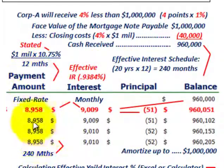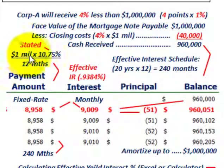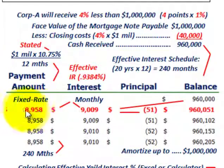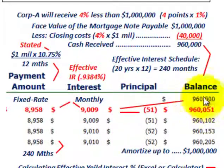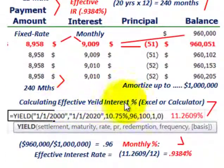First, we know the fixed payment amount. We take the stated rate of interest — 10.75% on the $1 million note — times the stated rate, divided by 12 months per year. That gives us the monthly fixed rate of interest of $8,958. For the effective interest method amortization, we need to find the effective interest rate on this note. The stated rate is 10.75%, but the effective rate will be slightly higher because they received the note for less than face value — similar to a discount on a bond.